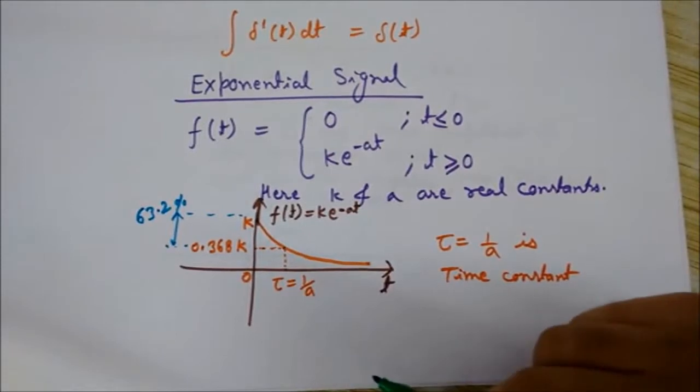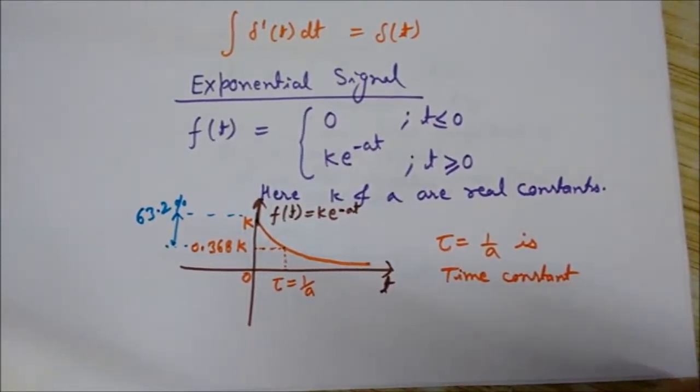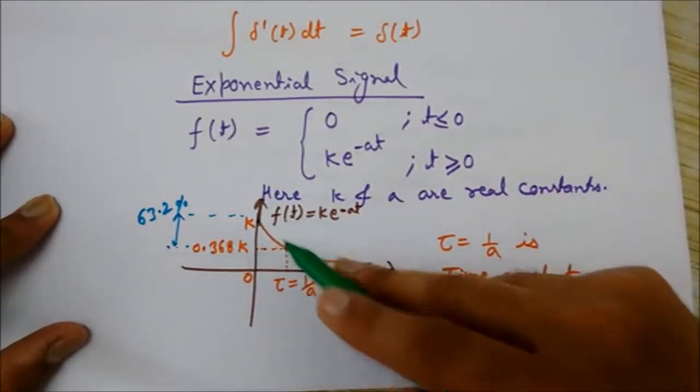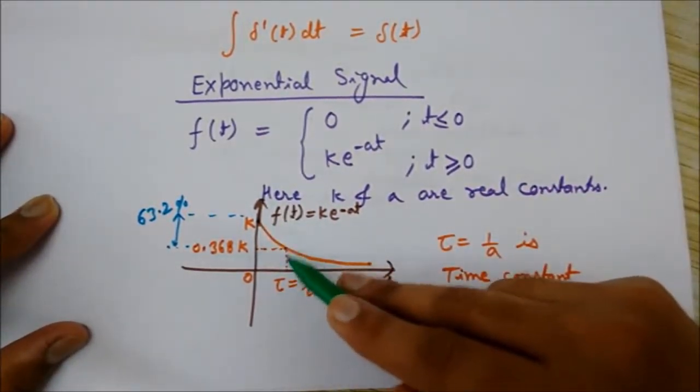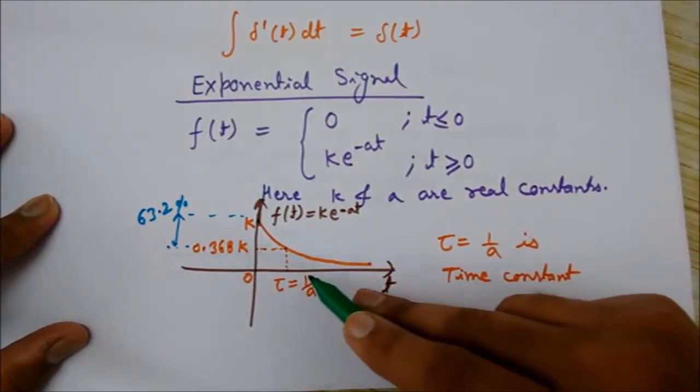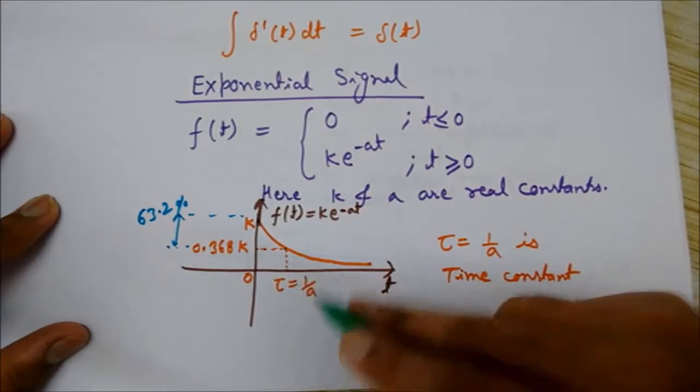the time constant. Let's understand what is time constant. You can see here that the time constant tau is denoted by 1/a, so this time constant is 1/a.